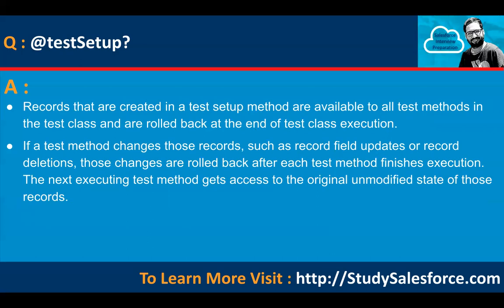In one method if you have queried the data and made some changes, in another method those changes will be rolled back and you will have fresh data. If a test method changes records — such as a record field update or record deletion — those changes are rolled back after each test method finishes execution. The next executing test method gets access to the original unmodified state of those records.